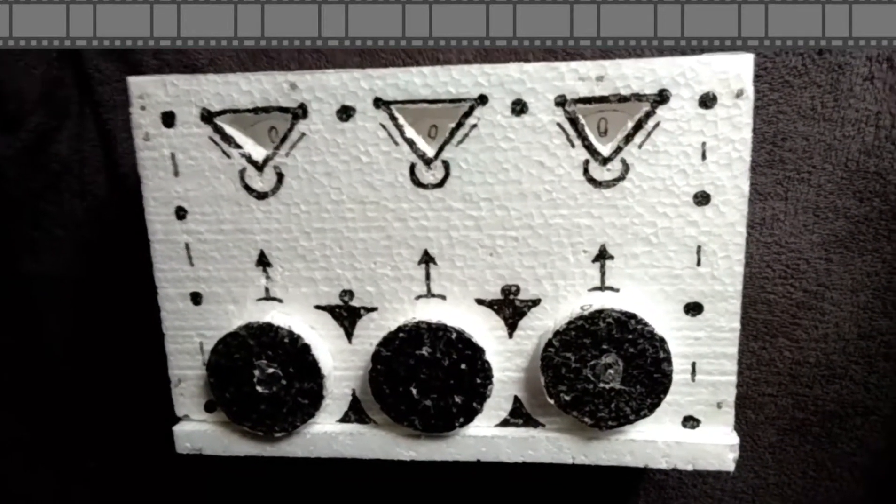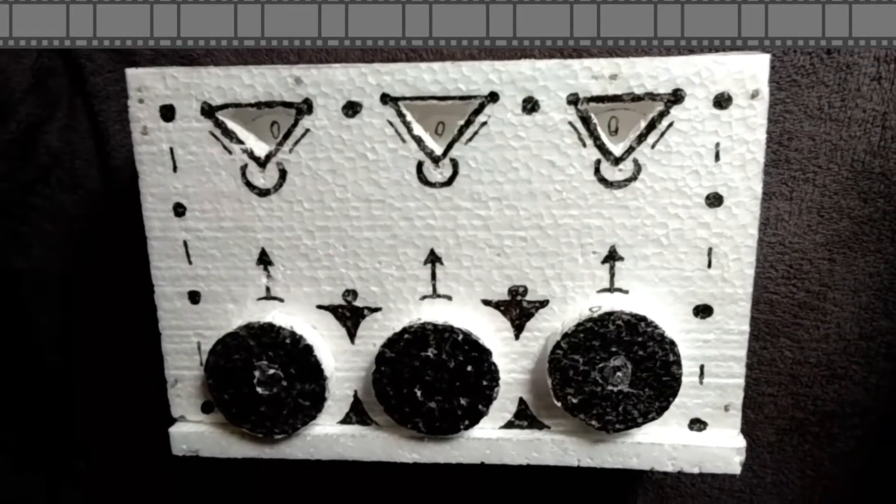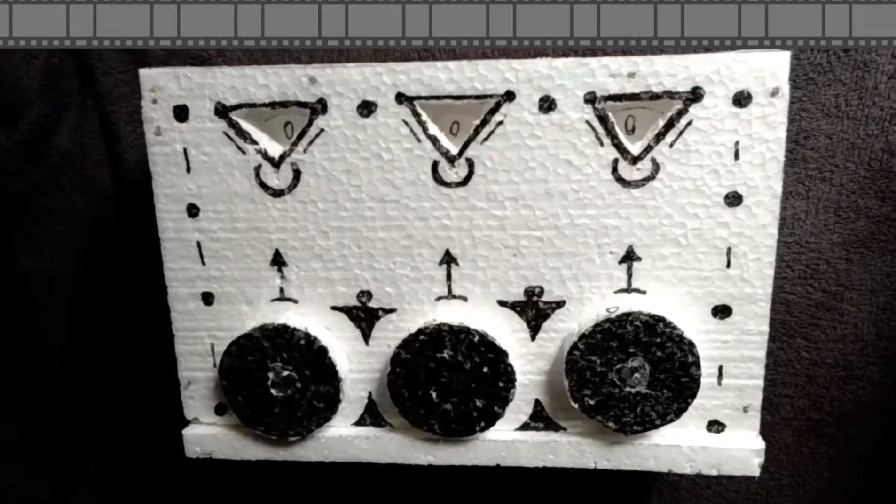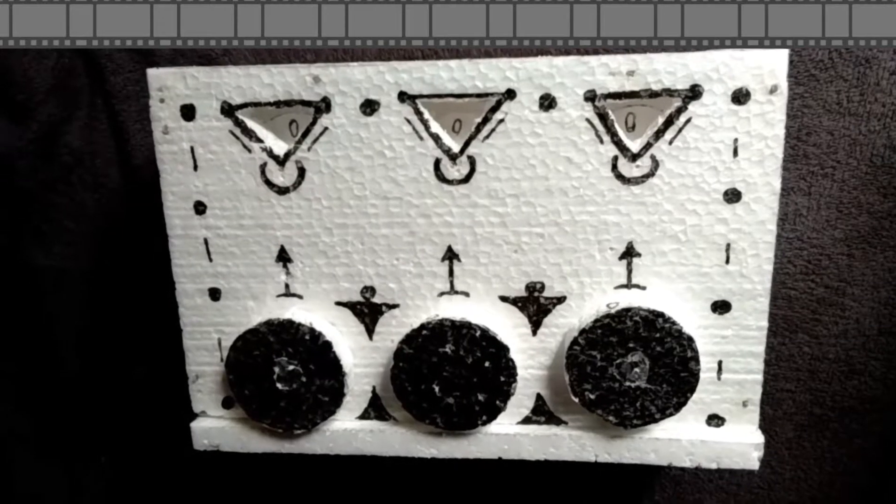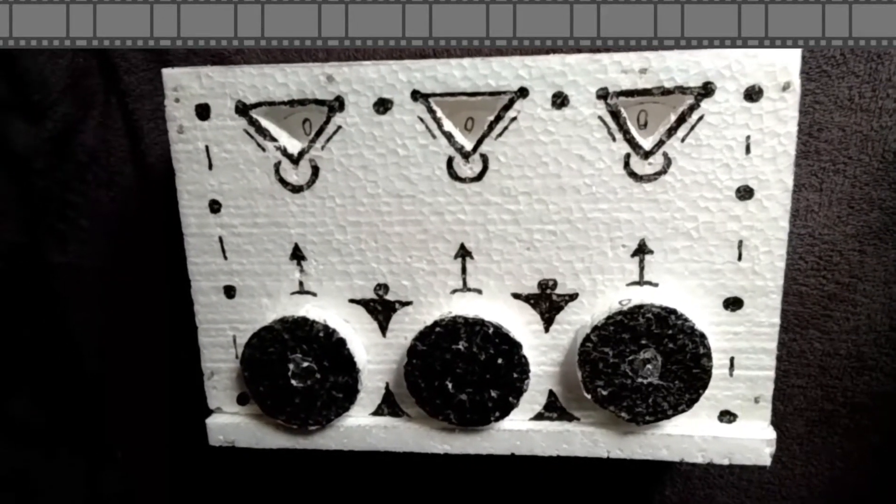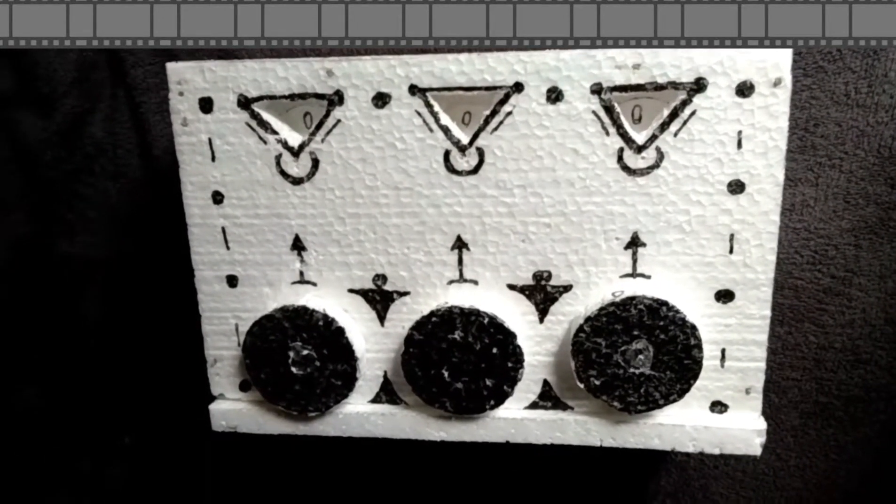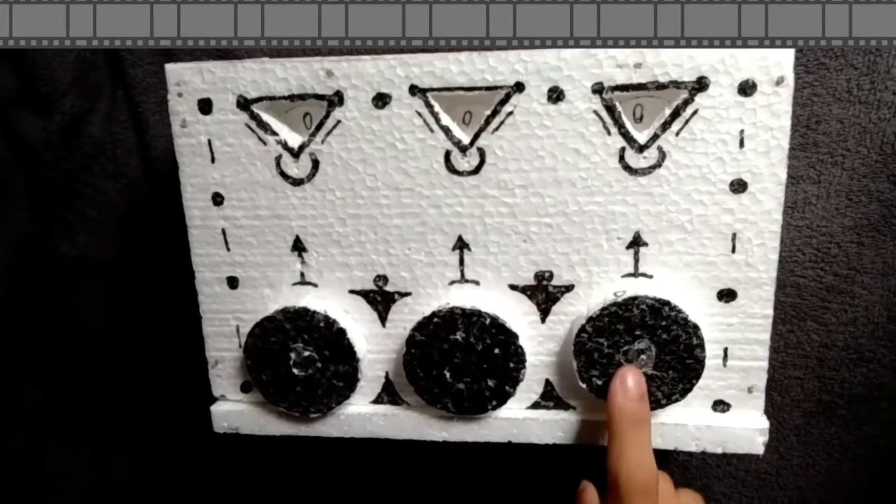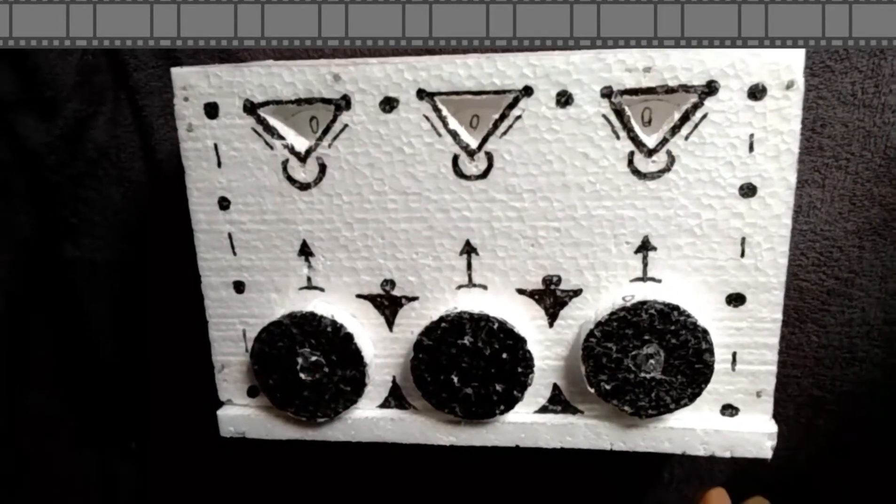How does the Pascaline work? The Pascaline works when you turn the button. Once you turn the first button until nine, the other gear will add. So our Pascaline has three gears: one, two, three.